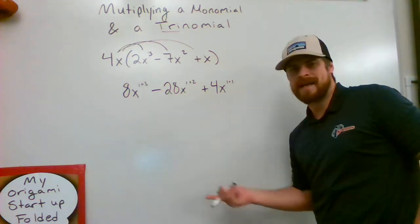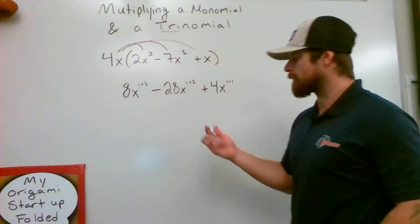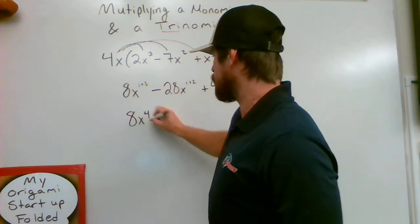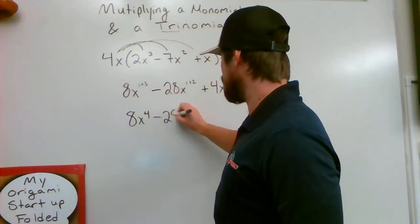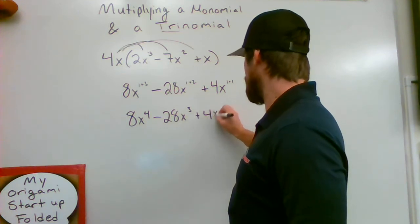And then we're going to do our last final step where we just add our exponents together, and we're going to get our final result. So our final result is a trinomial, 8x to the 4th minus 28x to the 3rd plus 4x squared.